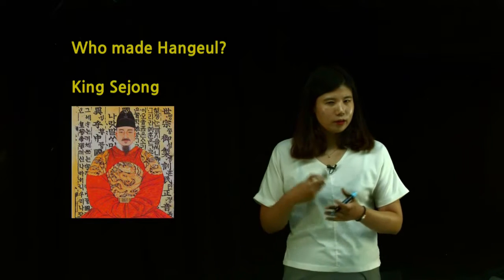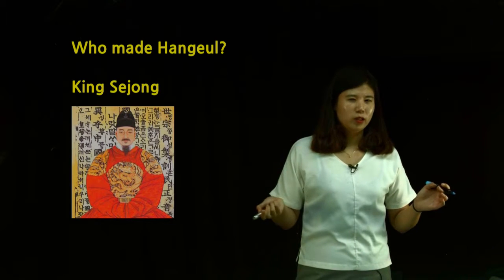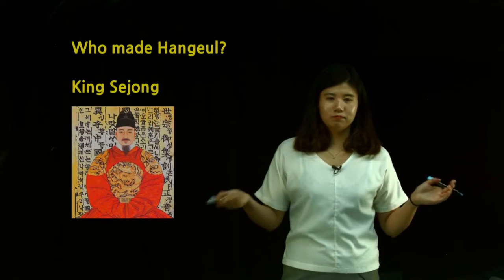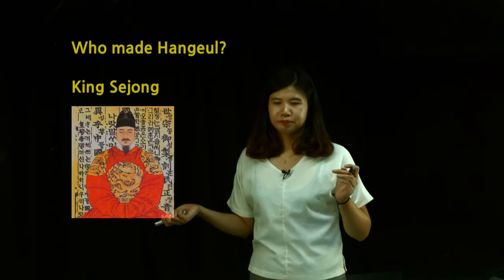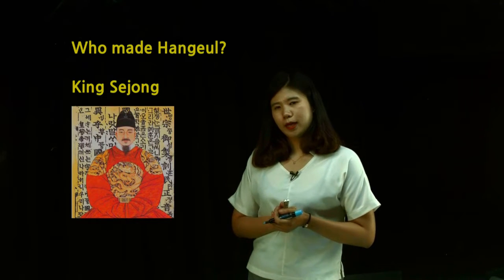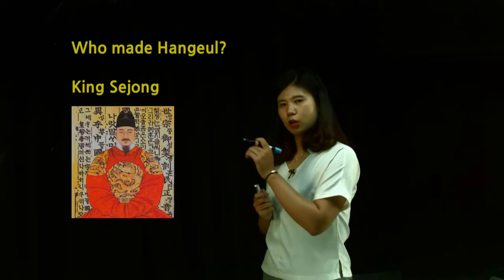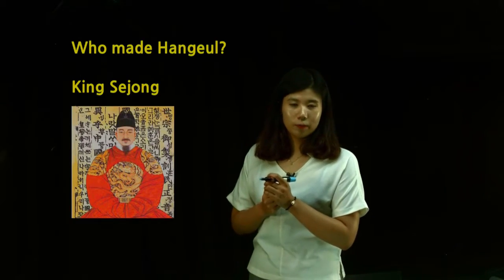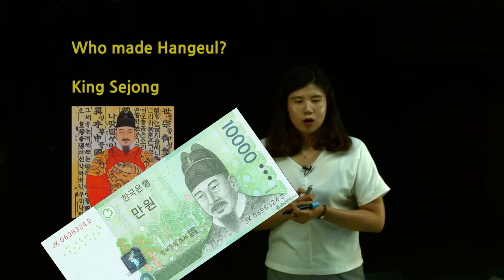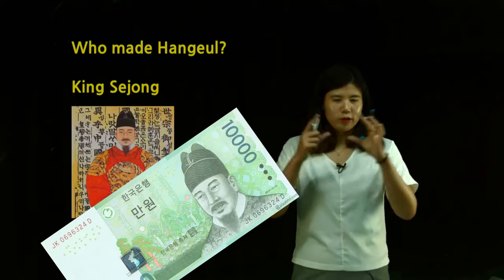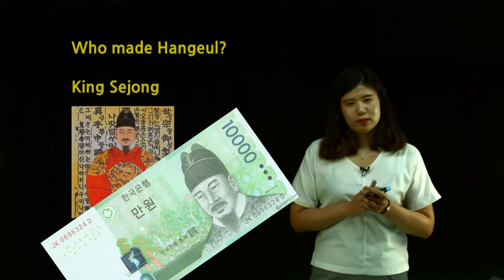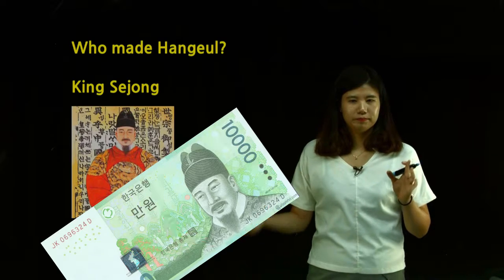Unlike other kings who liked to drink, eat, and have a nice time, he actually cared about his people. And if you see the Korean bill — the 10,000 won, the green one — you will see his face on it. He's like the model of the bill.